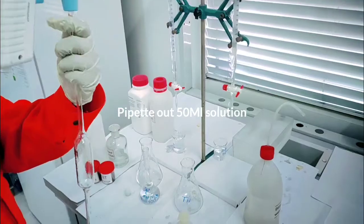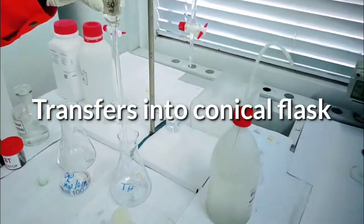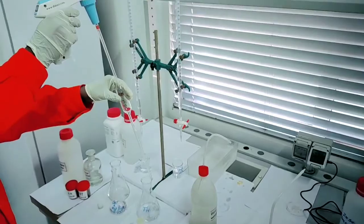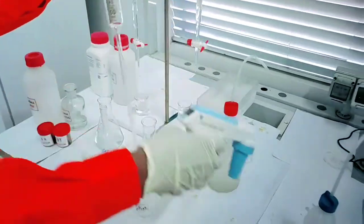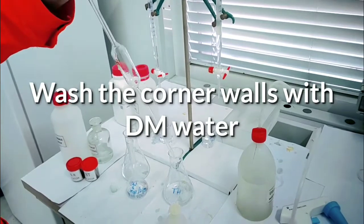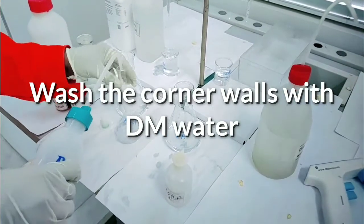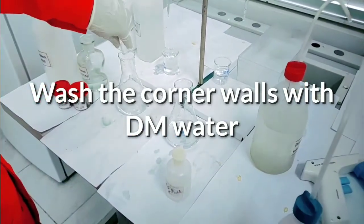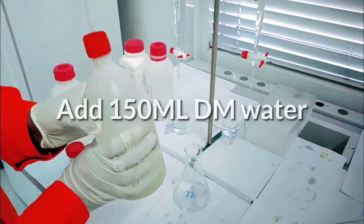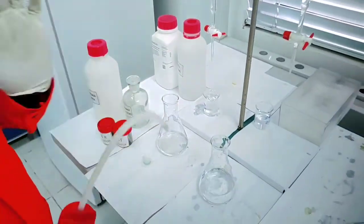Pipette out filtrate solution 50 ml. Transfer into a clean conical flask. Rinse the pipette and conical walls with distilled water. Add 150 ml distilled water to each conical flask.